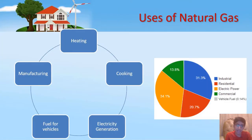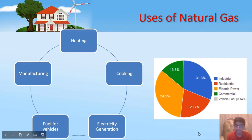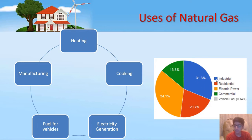The uses of natural gas are mainly heating, manufacturing, cooking, fuel for vehicles, and electricity generation. Here I have a pie chart showing the different amounts of natural gas used in different sectors: 31% is used in industrial, 20% in residential, 34% in electric power, 13.8% in commercial, and 0.14% in vehicle fuel.